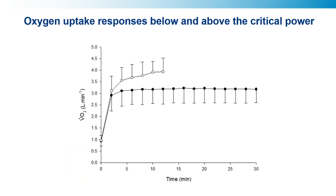We now need to think about the physiology of this. When we perform exercise below and above the critical power — 15 watts below and 15 watts above, measured by a three-minute all-out test — we see steady-state responses below the critical power but non-steady-state responses above it. The VO2 response is driven by high-energy phosphate metabolism: the breakdown of phosphocreatine and the rise of creatine and inorganic phosphate drive the mitochondria and thus the VO2 response. So you should expect to see a mirror image response in phosphocreatine below and above the critical power.